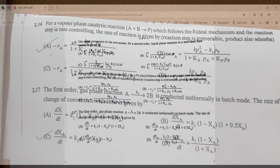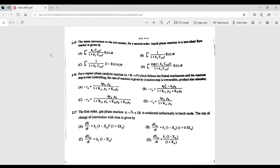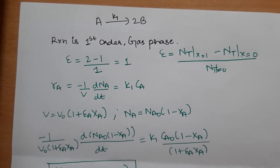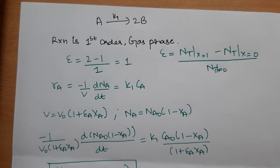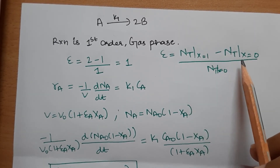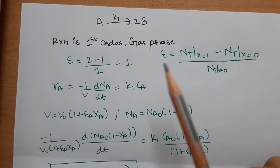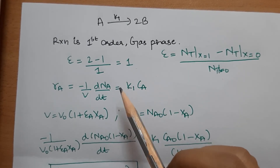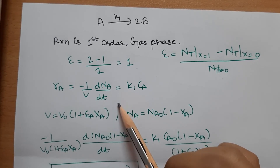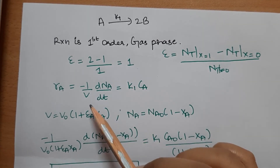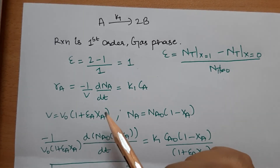Question 2.17: a first-order gas phase reaction is conducted isothermally in batch mode. We need to find how conversion changes with time. For a first-order gas phase reaction, the volume expansion factor ε_A comes into play — it equals the change in moles at complete conversion divided by initial moles. Here ε_A = 1.